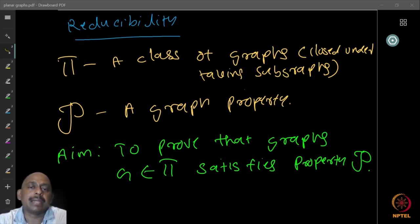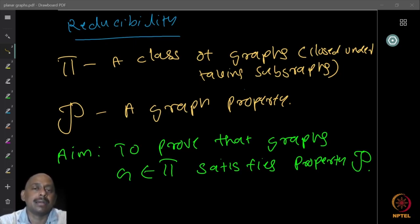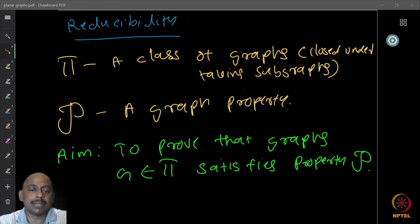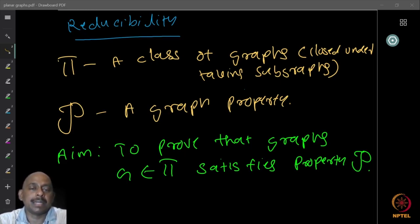Let π be a class of graphs closed under taking subgraphs. Hereditary means that if you take subgraphs, the property still remains. For example, planar graphs have this property because any subgraph of a planar graph is also planar. Non-planar graphs do not have this property, since a subgraph could be planar. So I take a class closed under taking subgraphs. Let P be some graph property — it could be colorability, chromatic number, or anything else.